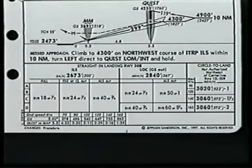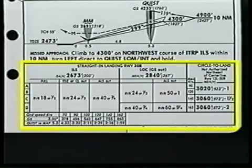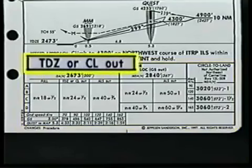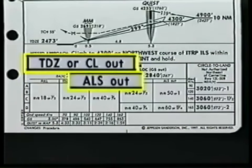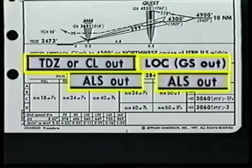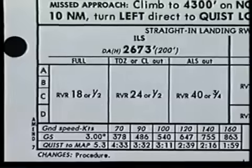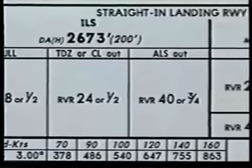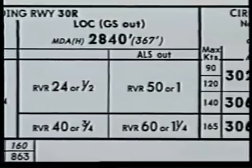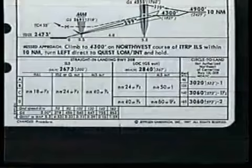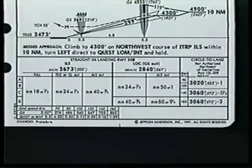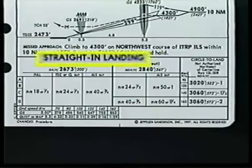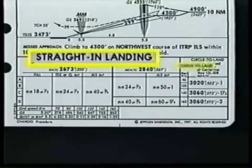Now it's time to discuss the last and one of the most important sections on the approach chart, the landing minimums. Landing minimums usually increase when a required component or visual aid becomes inoperative. Jeppesen presents this information in a logical sequence. The lowest minimums are located on the left side of the box. As you move to the right, the minimums increase. On most approach charts, the minimums table actually represents two groups: straight in and circle to land.